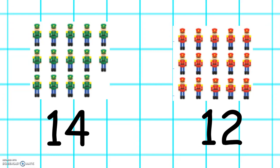So which group has the most? The green soldiers or the red soldiers? The green soldiers are the most because 14 is a bigger number and the red soldiers are the least because 12 is a smaller number.